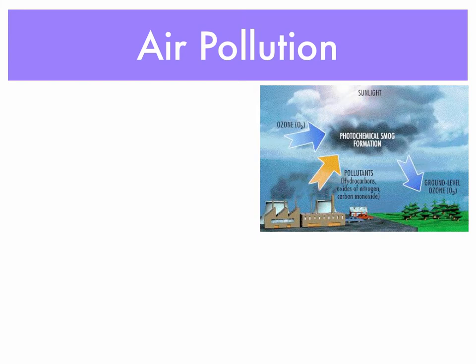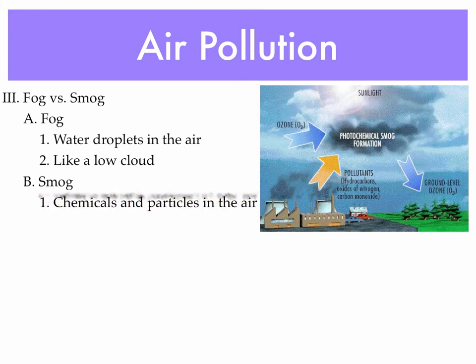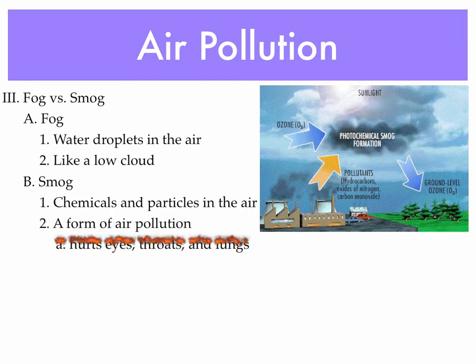What are some types of air pollution? The first one is fog and smog. What's the difference? Fog is actually just water droplets in the air — kind of like a low cloud. If you've ever been to San Francisco, you may have seen lots of fog. It's basically just a low cloud and there's no real pollution there. Smog looks very similar, but it's actually chemicals and particles in the air, and it is a form of air pollution, whereas fog is not.